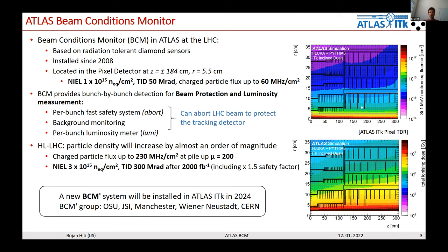At the high-luminosity LHC, conditions will change, with particle density increasing by almost an order of magnitude, resulting in the environment shown here. The BCM will have to be upgraded with a new system called BCM prime, which will be installed in Atlas ITK in 2024. The BCM prime group consists of Ohio State University, Josef Stefan Institute, Manchester, Wiener Neustadt, and CERN.